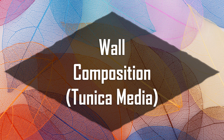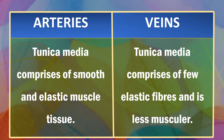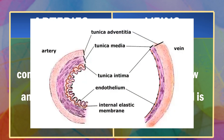Finally, let's differentiate between arteries and veins based on their wall composition, or the tunica media. The tunica media is the middle portion of the vessel wall. In arteries, the tunica media comprises smooth and elastic muscle tissue, while in veins, the tunica media comprises few elastic fibers and is less muscular. As we can see, the wall of the vessel is thicker in arteries than veins.